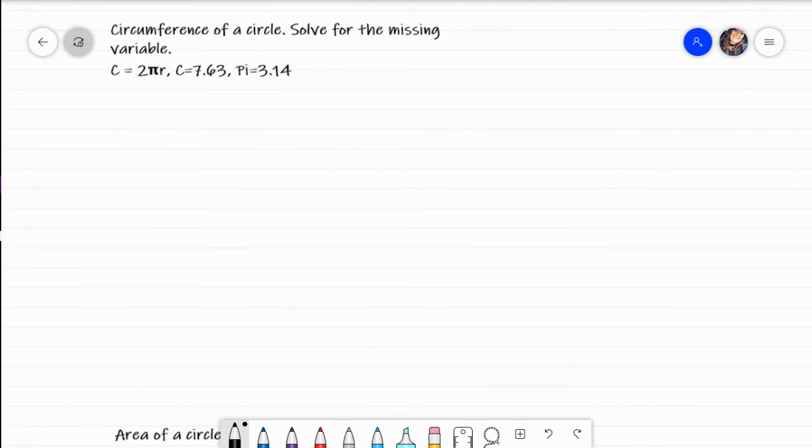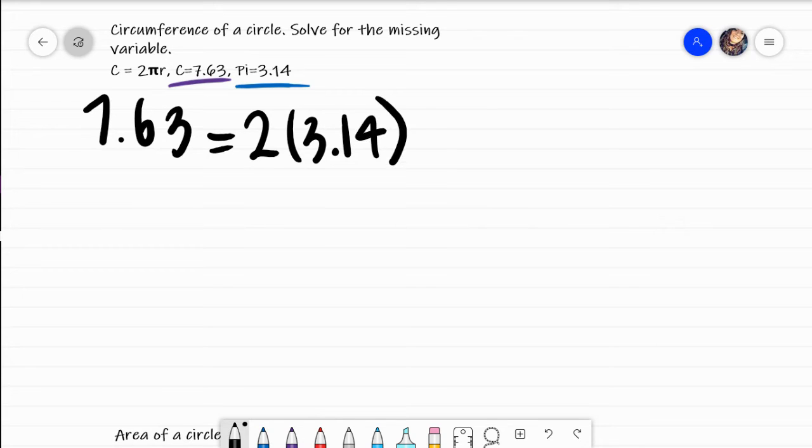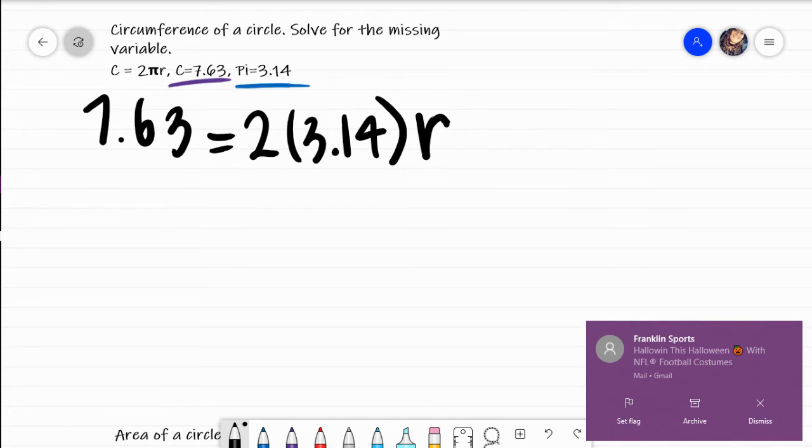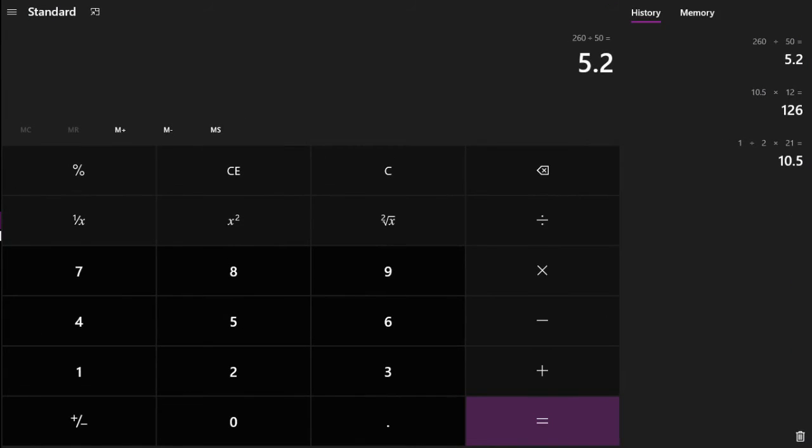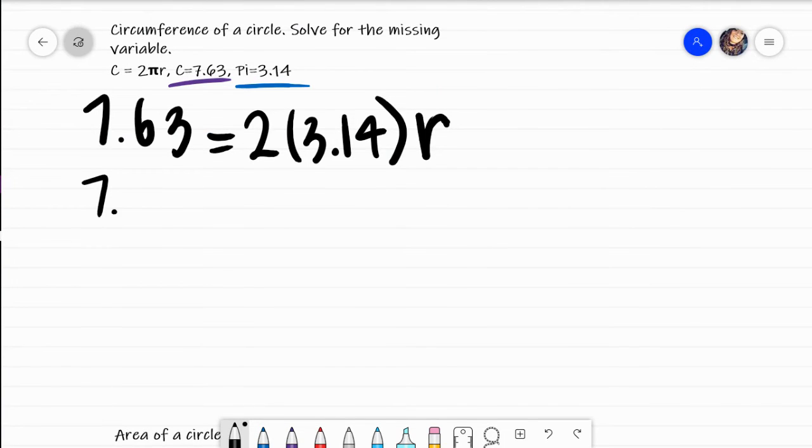Now let's do this problem. It says the circumference of the circle. The actual equation for the circumference of a circle, we would have C equals 2 pi r, which is 2 times pi times r. It wants us to solve for the missing variable. I notice that I'm given my C and I'm given my pi is 3.14. So my C is 7.63 equals 2 times pi which is 3.14. I don't know my r. What we would do is multiply our 2 times 3.14. So 2 times 3.14 is going to give me 6.28. So what I get is 7.63 equals 6.28 r.